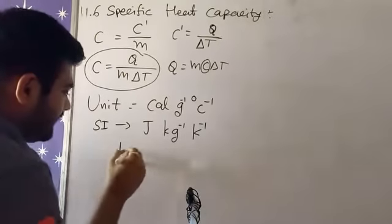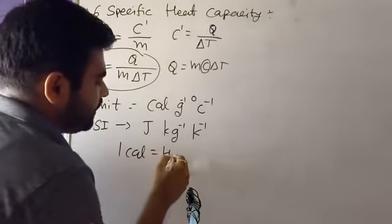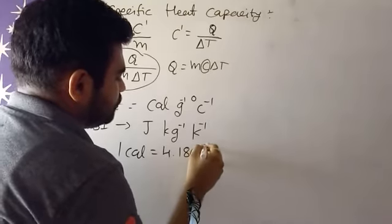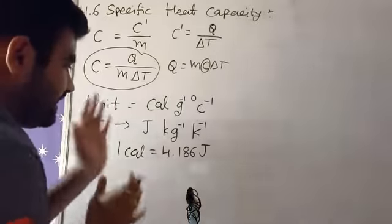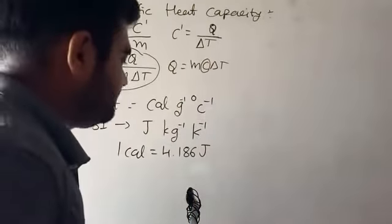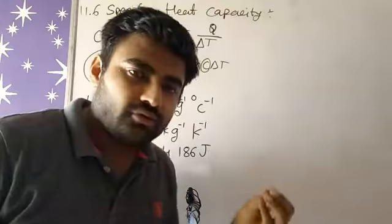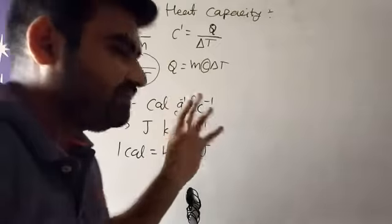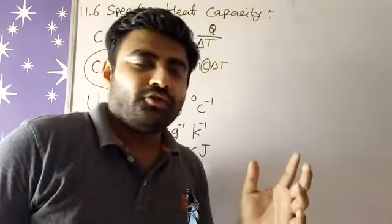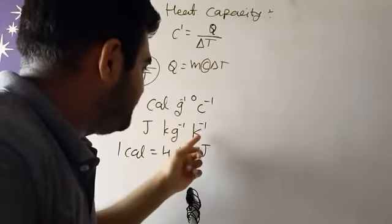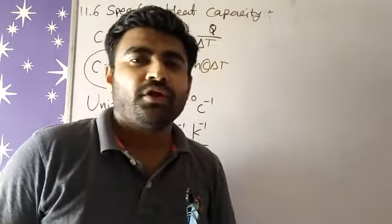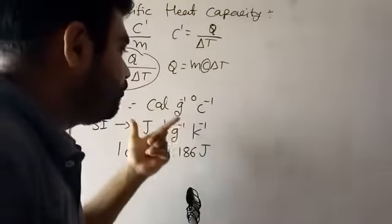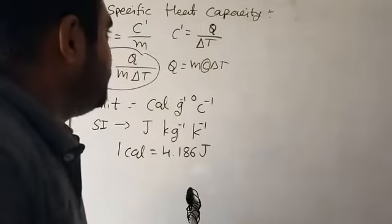We know that one calorie is equal to 4.186 Joule. It is this simple transformation. One gram is equal to 10 to the minus 3 kg, right? And Celsius and Kelvin, the two conversion is equal to CGS. So if Kelvin is equal to Kelvin, then it will be plus 273. So all of this conversion is equal to here, right?